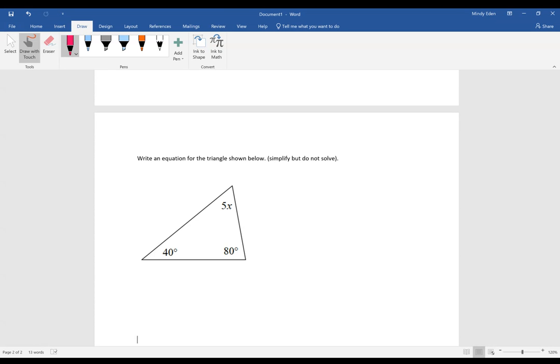So let's look at our second example. It says write an equation for the triangle shown below. Anytime you see the word equation, it means you need to have an equal sign in your answer.